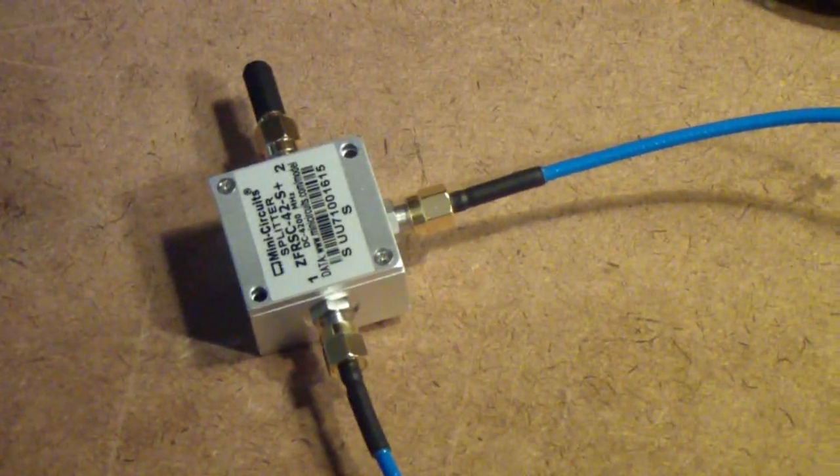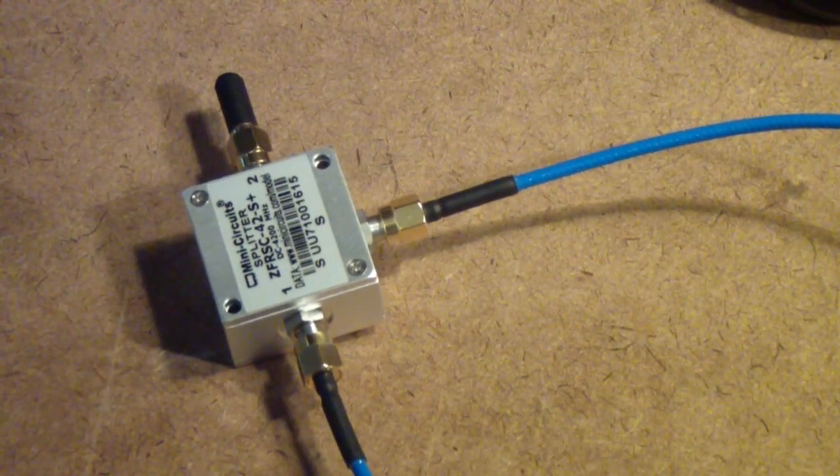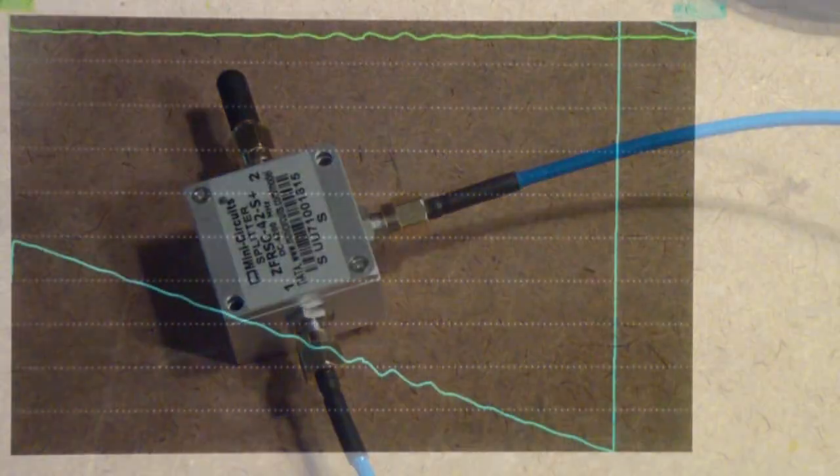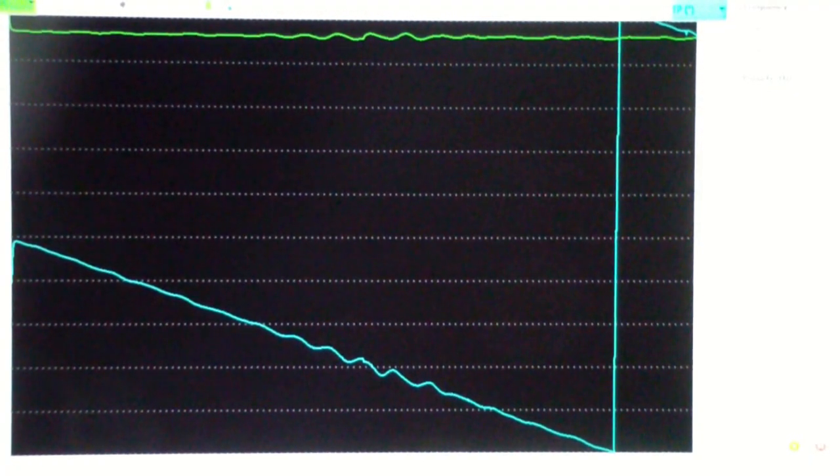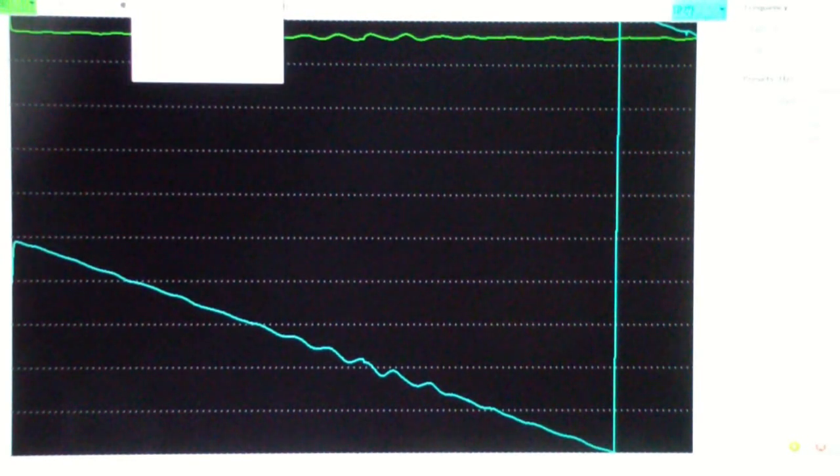So let's go look at what the VNAJ software shows us are the characteristics of this device. If you remember, this was the attenuator, and it's still on the screen. Now, we are going to do a new analysis, single scan,